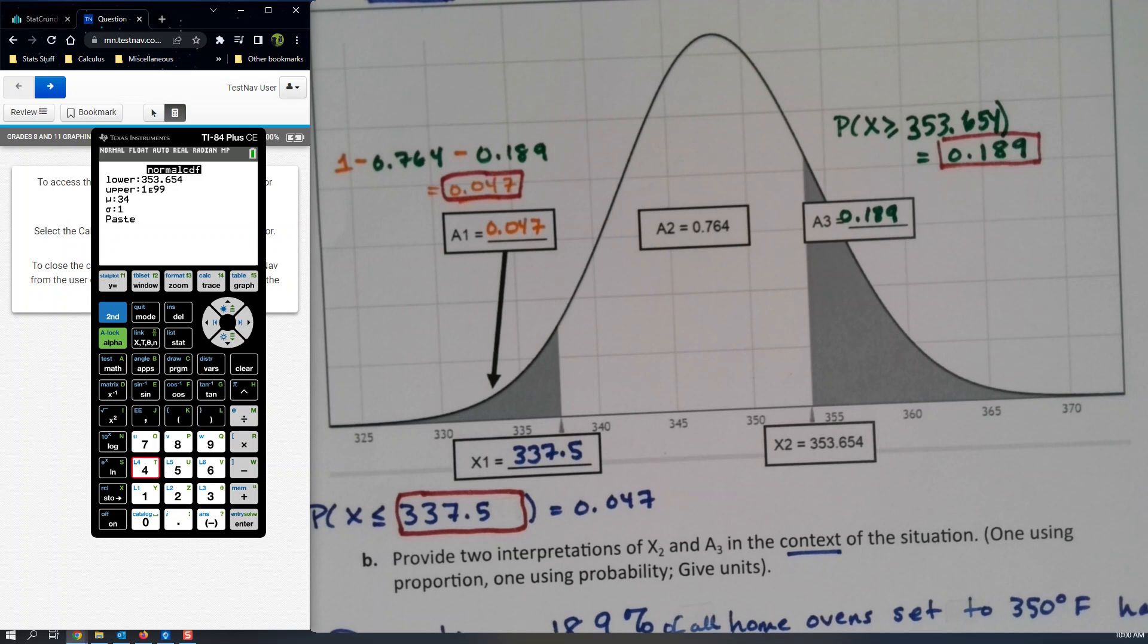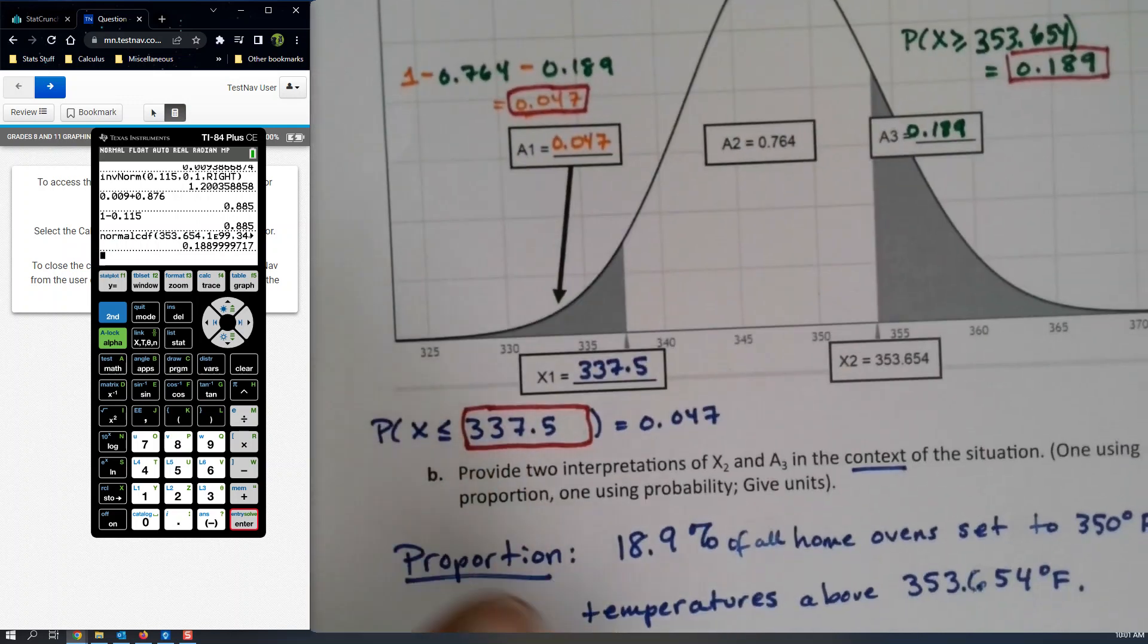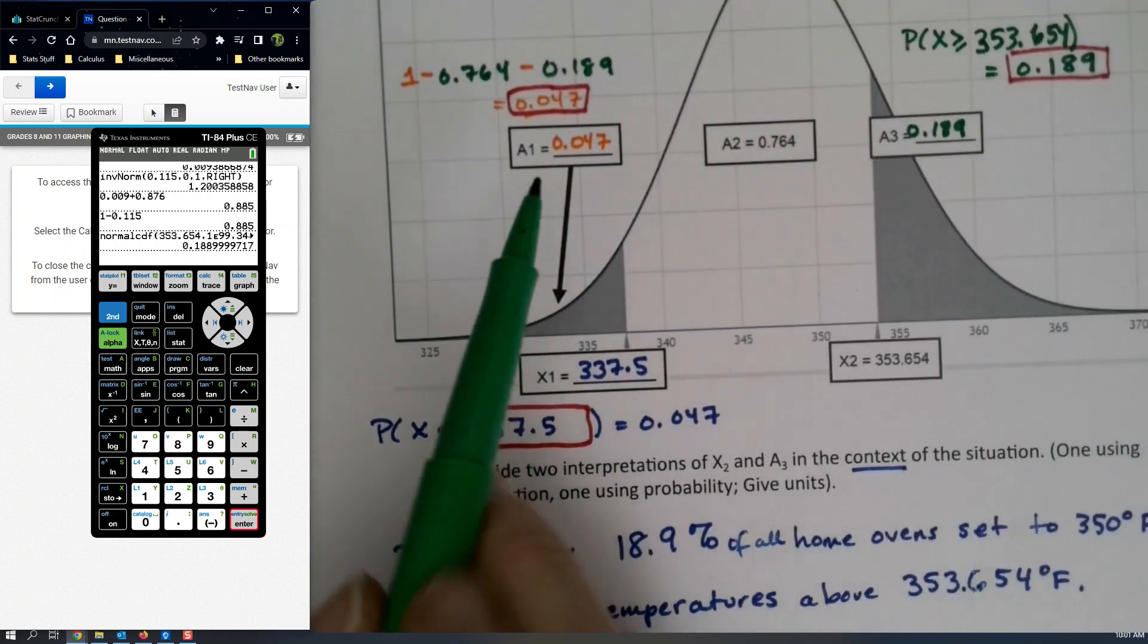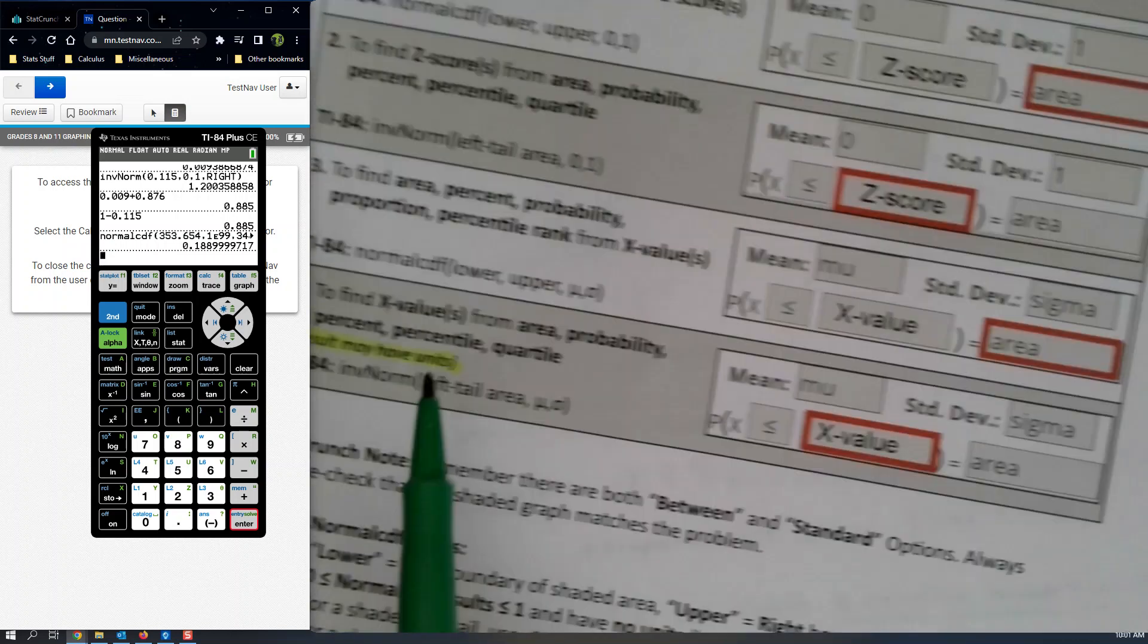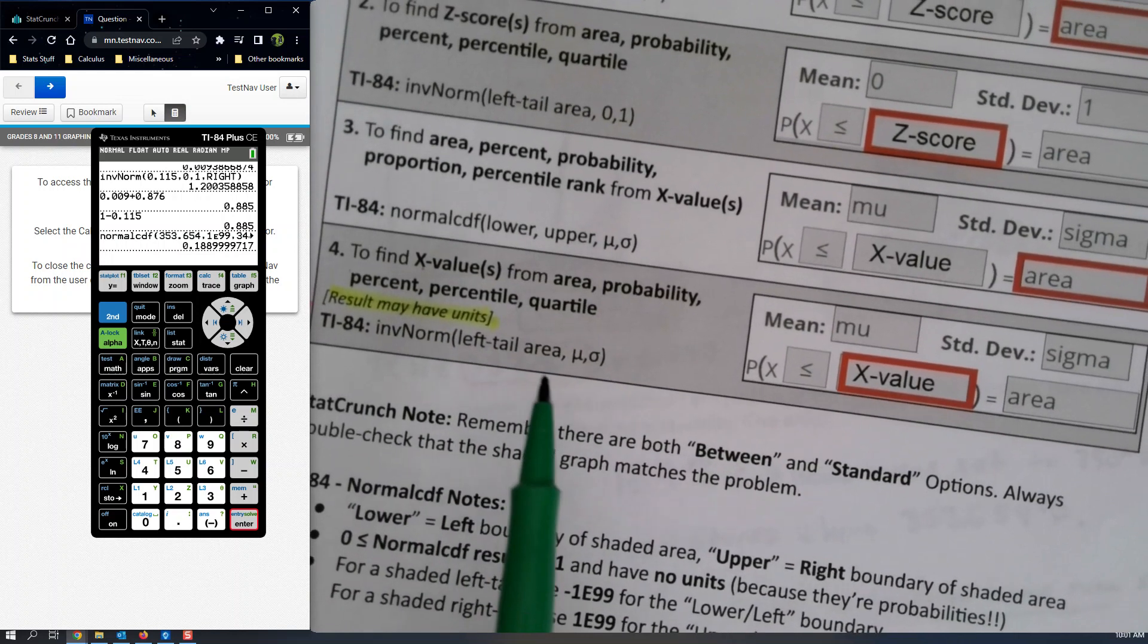The upper is 1E99, because it's standing in place of infinity. Your mean is 348.1, your standard deviation is 6.3, and then paste and then press enter. And there you have it, 0.189 when you round it. So then the area over here find the same way using decimals.